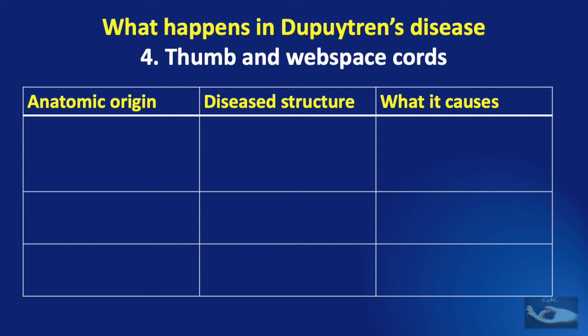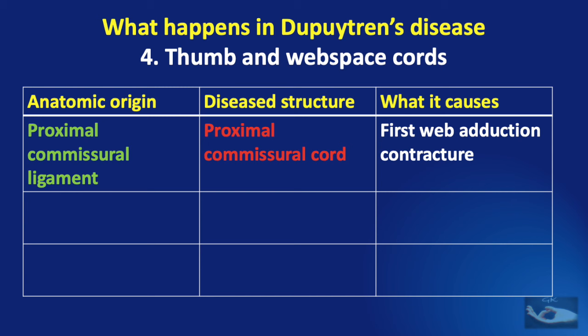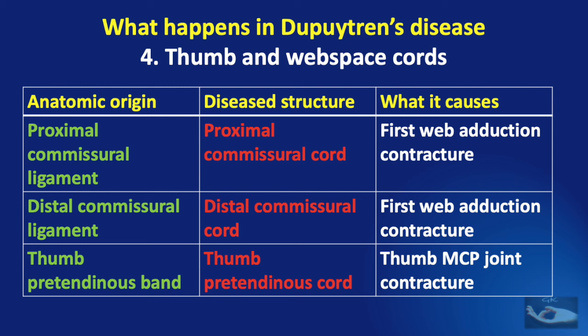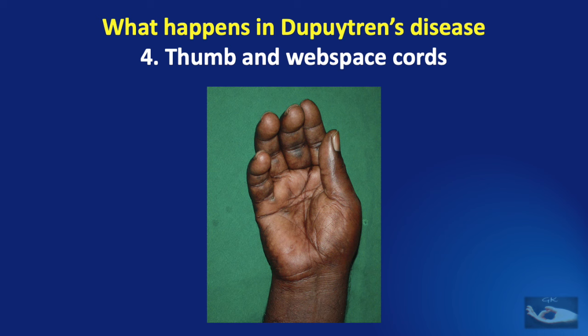When the fascia of the thumb and thumb web space are involved, we get the thumb and web space cords. The proximal commissural ligament, when involved, becomes the proximal commissural cord, which causes contracture of the thumb web. The distal commissural ligament, when involved, becomes the distal commissural cord, which also causes first web adduction contracture. The pre-tendinous bands in the thumb, when involved, get converted to thumb pre-tendinous cords, which cause thumb metacarpophalangeal joint flexion contractures. In this clinical example, you can make out the thumb web adduction contracture and minimal contracture of the metacarpophalangeal joint of the thumb also.